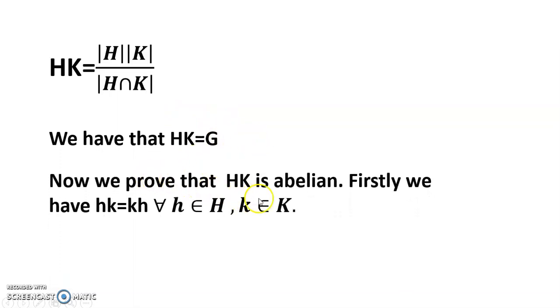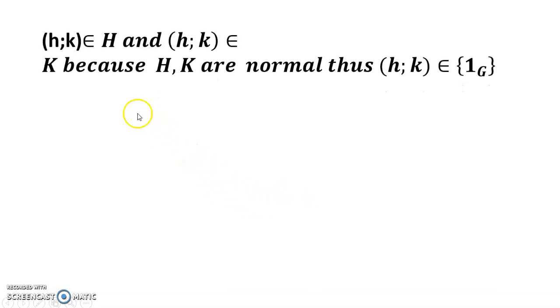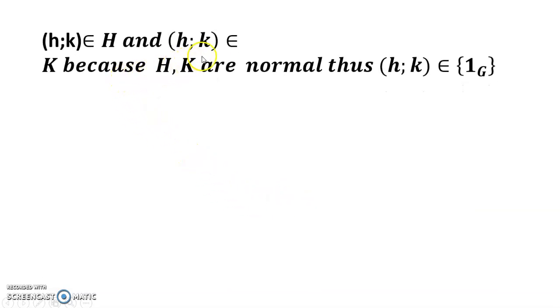Now we prove that HK is abelian. Firstly, we have HK = KH, and k ∈ K, h ∈ H. So (h,k) ∈ H and (h,k) ∈ K...